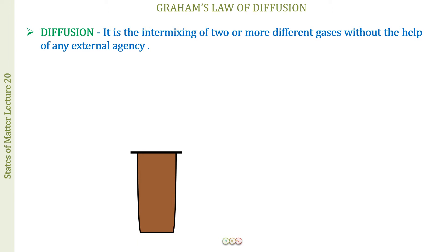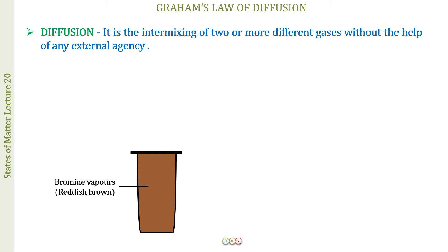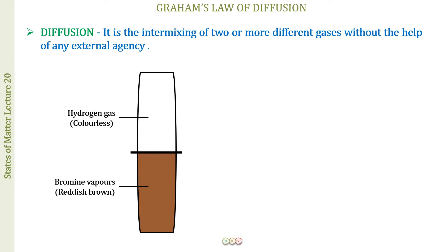Let us see this diagrammatically. We have a cylinder. In this cylinder we put bromine vapours, which are reddish-brown in colour. We invert another cylinder containing hydrogen gas, which is a colourless gas. We have separated these two cylinders with a separating disc, so that the two gases cannot mix — we can see they are different in colour.